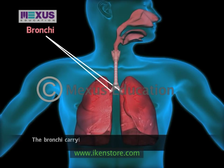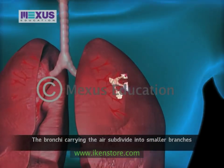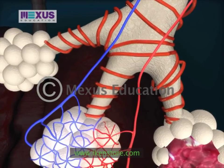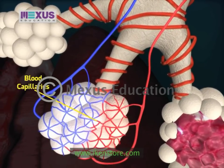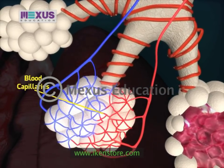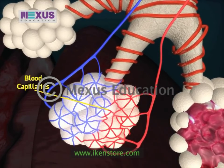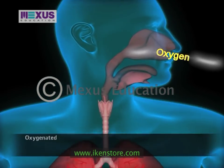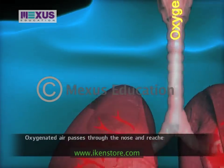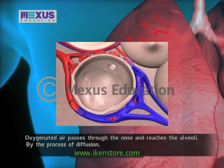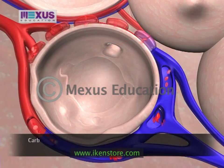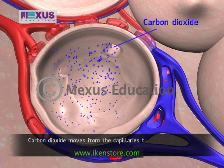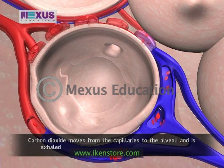The bronchi carrying air subdivide into smaller branches called bronchioles. At the end of each bronchiole are the alveolar sacs, surrounded by blood capillaries and containing millions of single-layered alveoli cells where gas exchange takes place. Oxygenated air passes through the nose and reaches the alveoli by diffusion. Oxygen moves from the alveoli to the capillaries; carbon dioxide moves from the capillaries to the alveoli and is exhaled, completing the process of respiration.